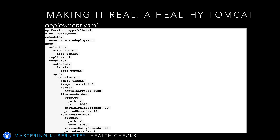That will check at a given interval if Tomcat is accepting requests or if it's hung. From the GitHub repository, let's look at the basic and core concepts forward slash health checks directory. The deployment.yaml file located inside it is what we're looking at now. You can find this file again under basic and core concepts forward slash health checks in the GitHub repository.